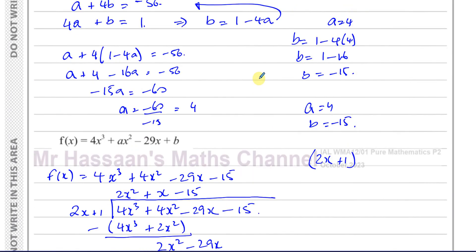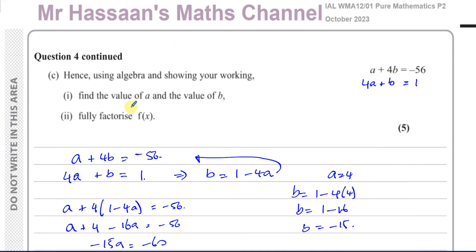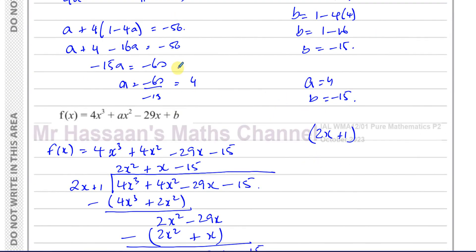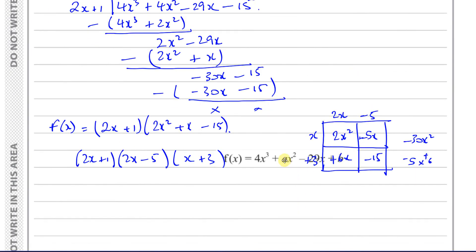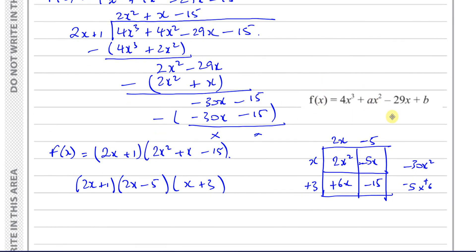So the original expression 4x³ + 4x² - 29x - 15 fully factorizes as (2x + 1)(2x - 5)(x + 3). That's the final answer to question 4(c).